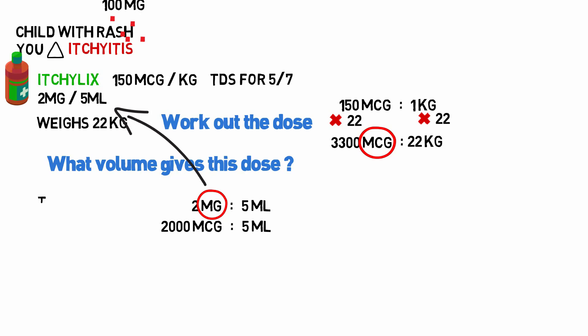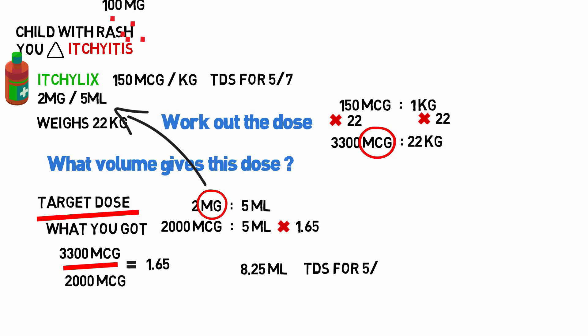And then again, the target dose divided by what you got. So the target is 3,300 micrograms. And what you got is 2000 micrograms, which equals 1.65. And you use this number to multiply the right-hand side of the equation. So 5 mils times 1.65 is 8.25 mils, TDS for five days.